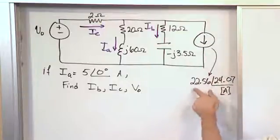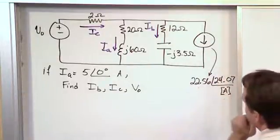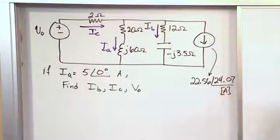It's a current source. The value of the source is actually known. It's 22.56 at an angle of 24.07 degrees. That's in amps.